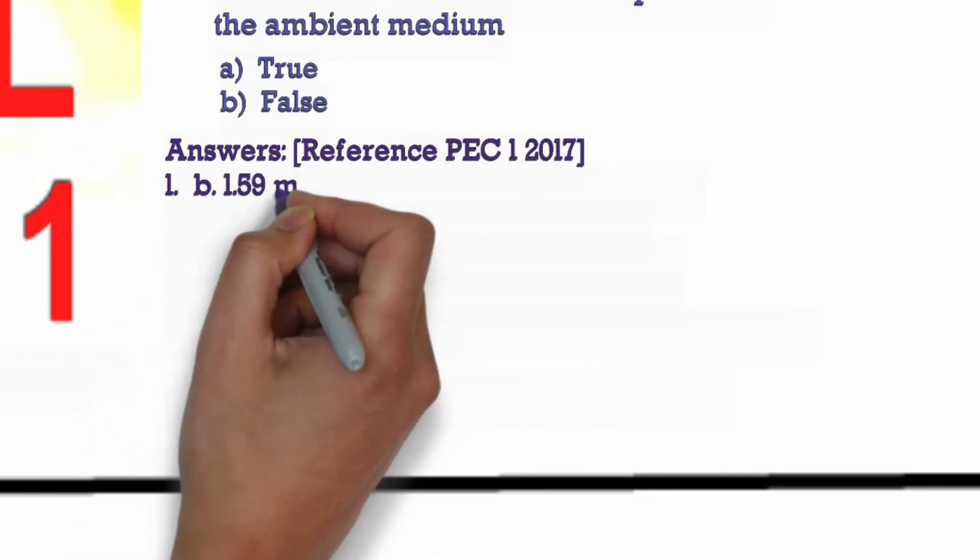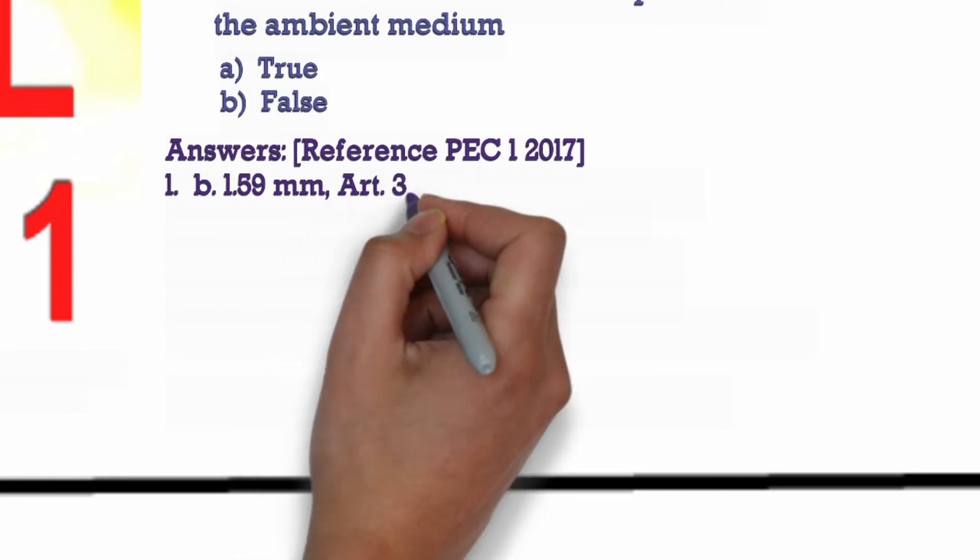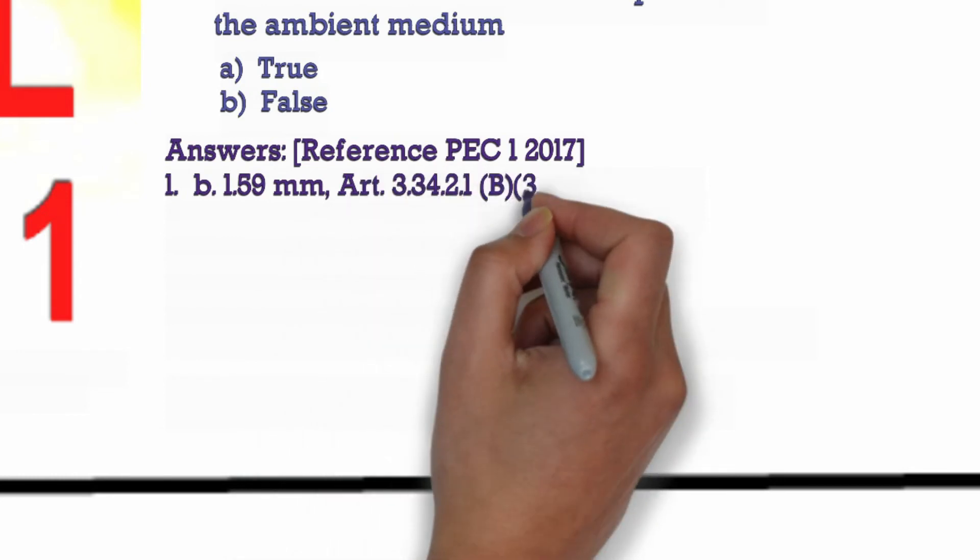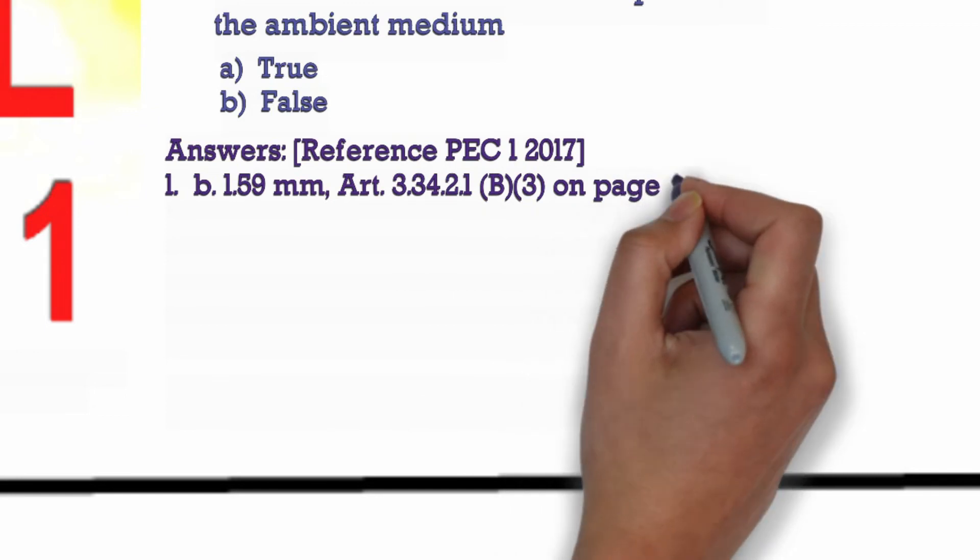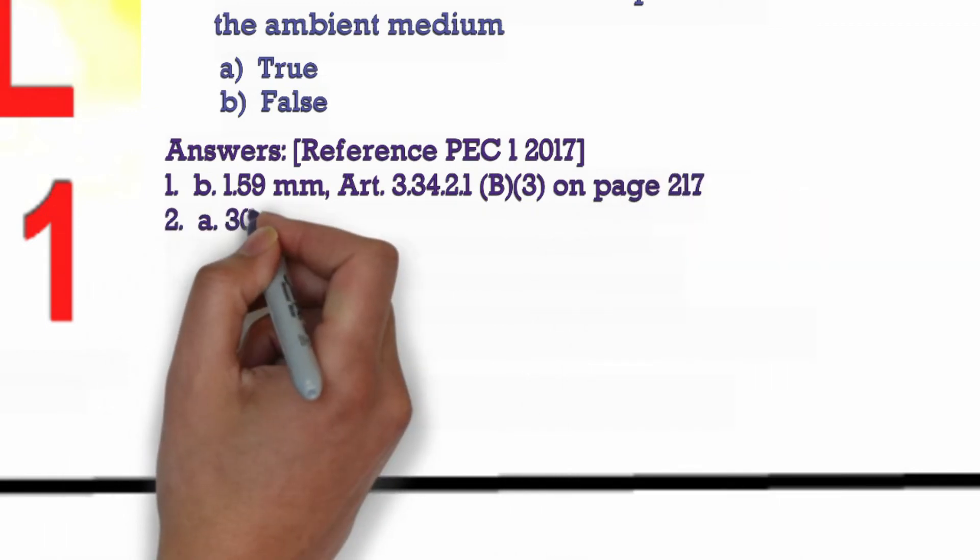1. B. 1.59 millimeter, Article 3.34.21(B)(3) on page 217. 2. A. 300 millimeter, Article 3.34.21 on page 218.